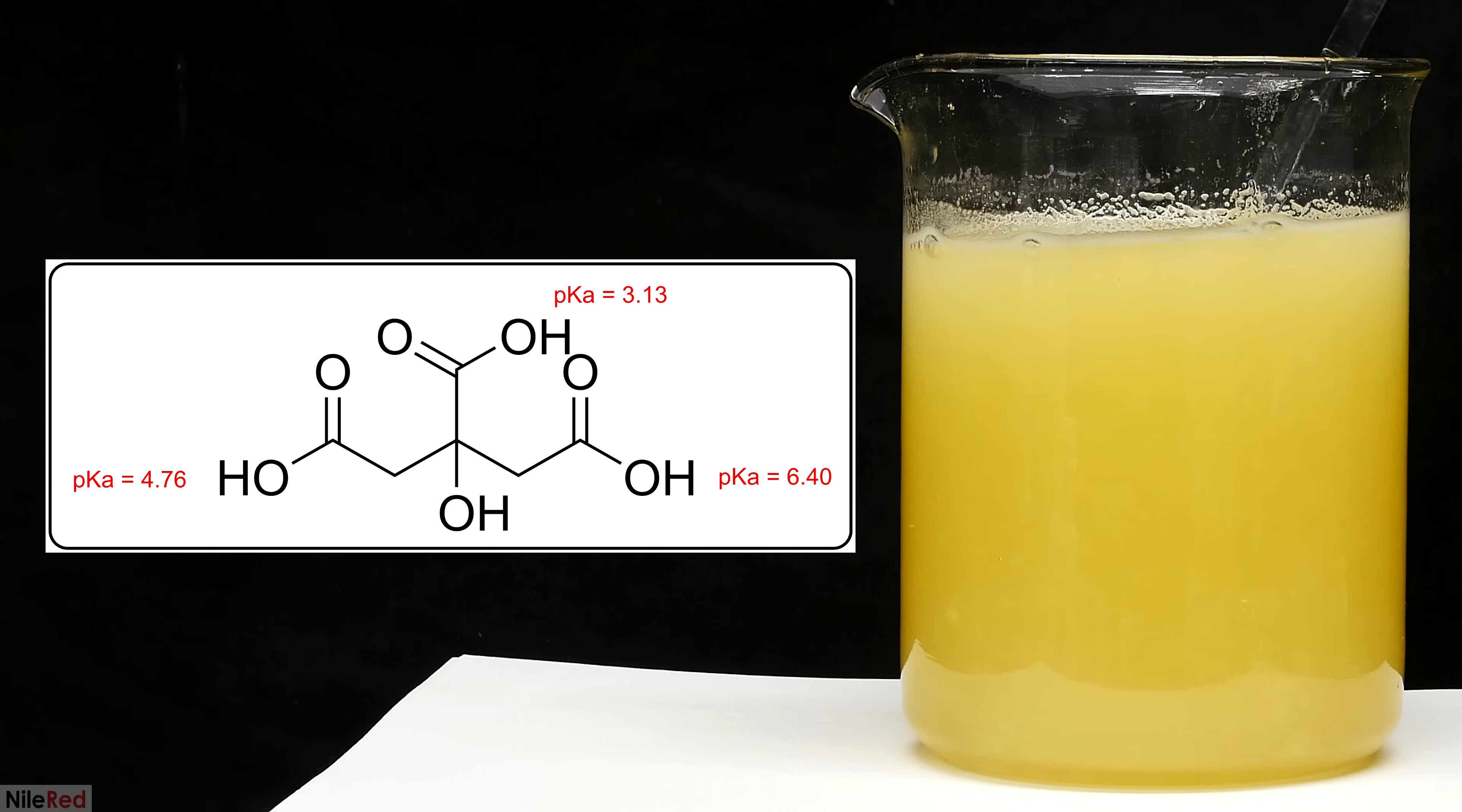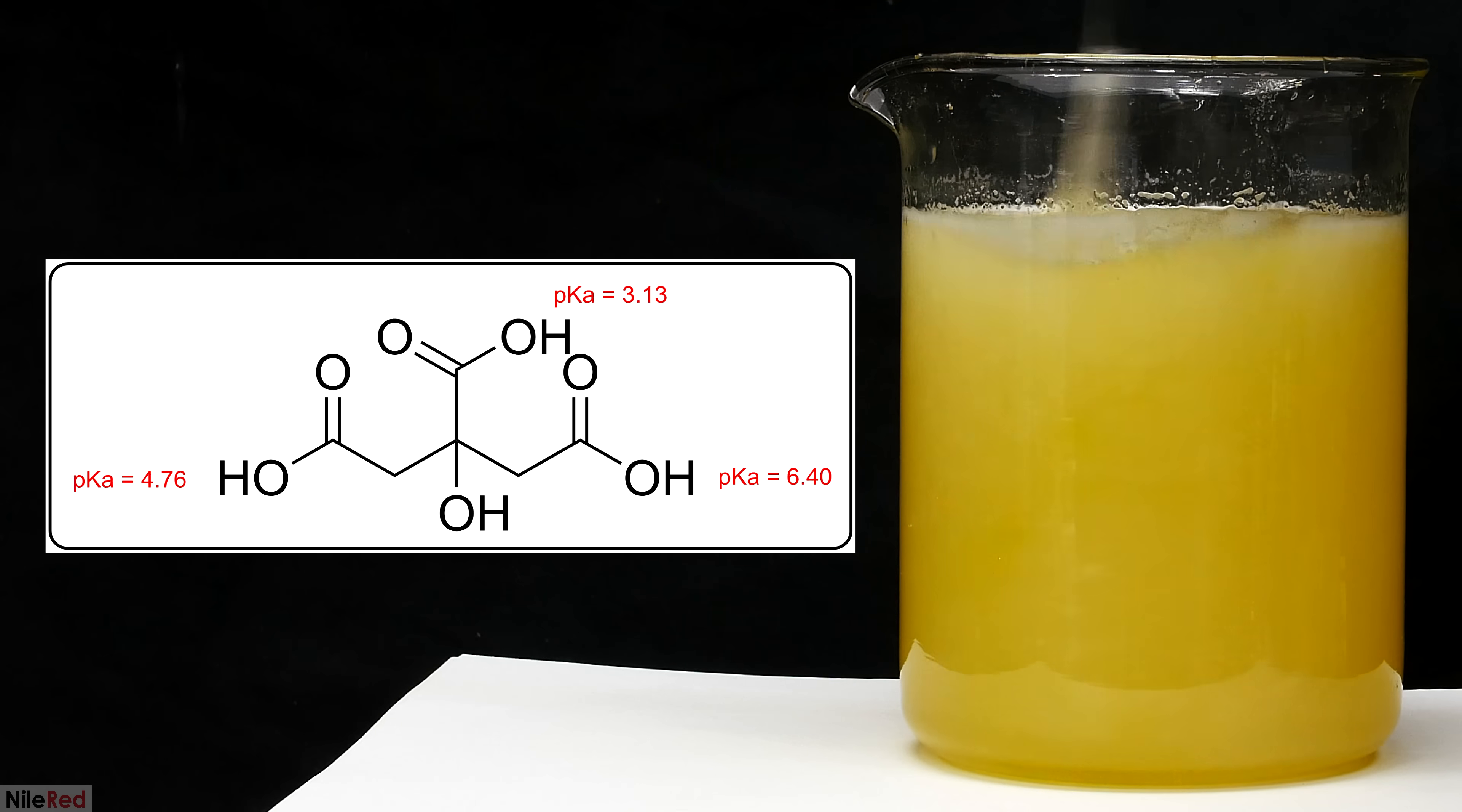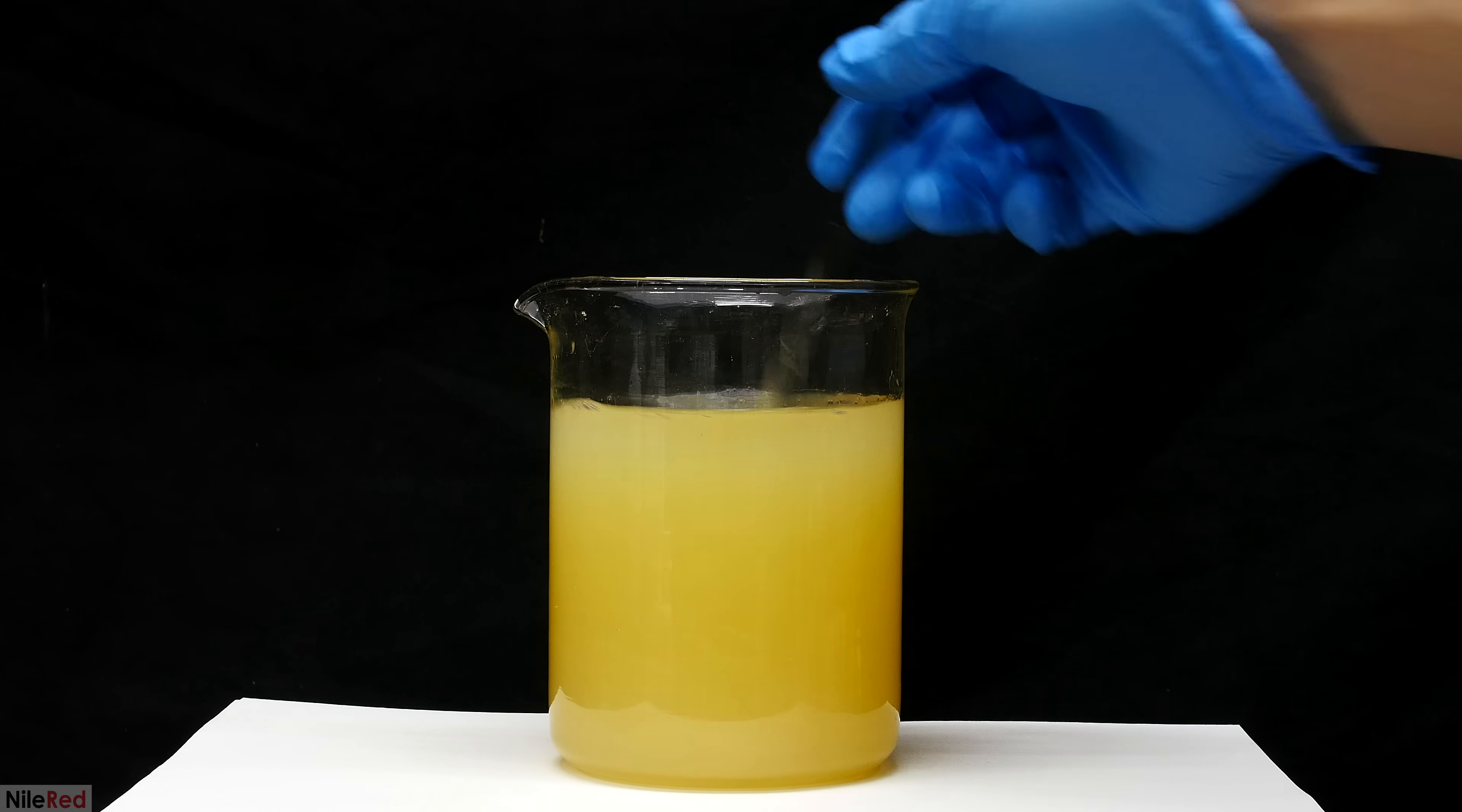For the second most acidic proton we'll need a pH around seven and for the least acidic one we need to bring it up to about eight point five or nine. Once we get a pH of about nine almost a hundred percent of the citric acid should be neutralized.